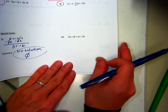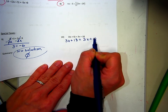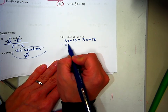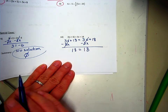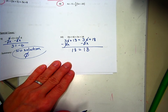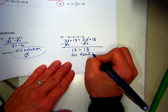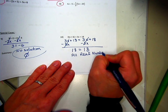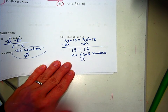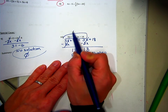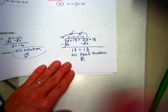Number 10 — I noticed there is something to distribute, so distribute the 3. Then subtract the x's from both sides. Again, the x's disappear, but this time I end up with two numbers that are the same. So the solution is all real numbers. The shortcut symbol for that is a capital R with an extra line through it. What this is saying is you can plug in any number for x and it will make both sides of the equation equal.